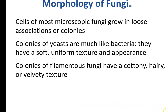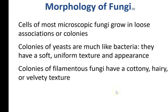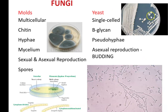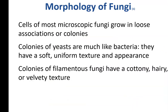Morphology of fungus: most fungal colonies have loose associations and grow in colonies. Yeast are like bacteria and grow clumped together in a colony — they look like little round dots. The fungus, on the other hand, have that real velvety, hairy, kind of soft-looking texture — big mats of stringy stuff, powdery and soft-looking.